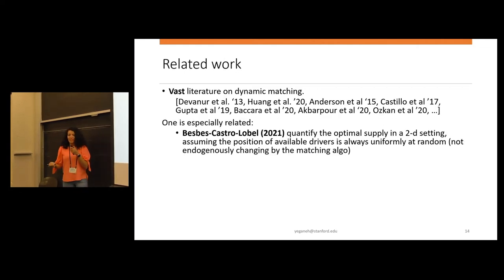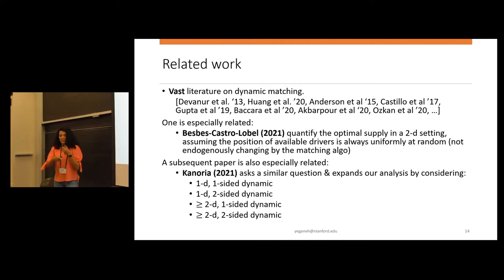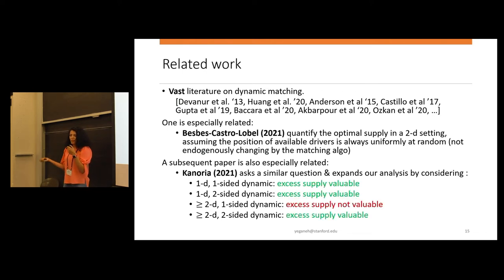Let me tell you where our work stands within the literature. There's a huge literature of dynamic matching and amazing works that I cannot talk about them today. But there are a few specific ones that are more related. One is the work of Vespas-Castron-Lobel, which they look at a two-dimensional setting. They quantify the optimal supply, assuming that the position of drivers is almost uniformly at random as I match it. So it doesn't change with the matching algorithm. But the more related one is the work of Canario, which I believe he's going to talk about it in more detail after me. He generalizes the result to high dimensional, a fully dynamic setting when riders and drivers both can arrive. And he showed that in three of the four general models, still the excess supply is valuable.